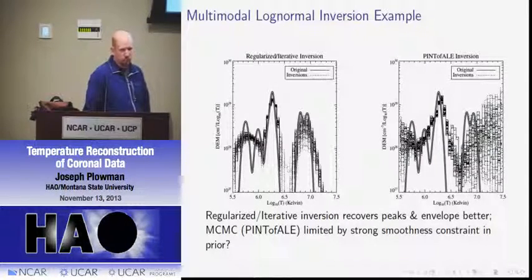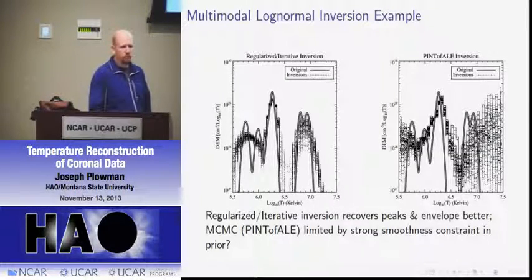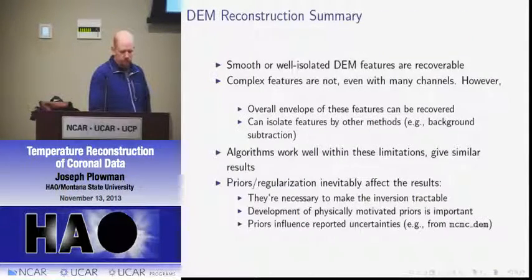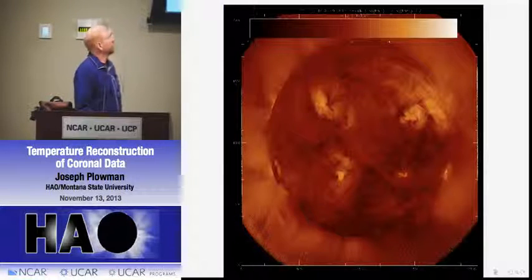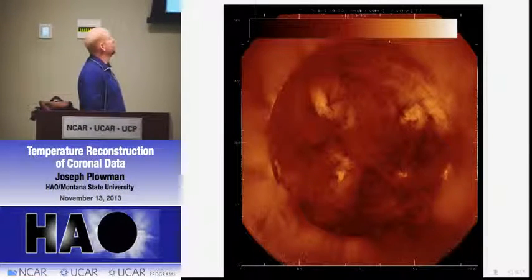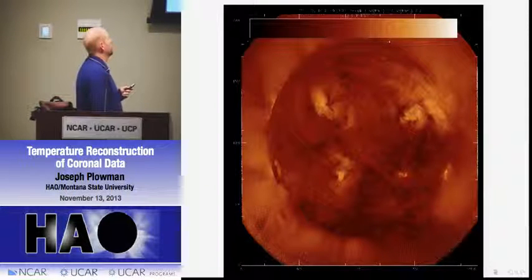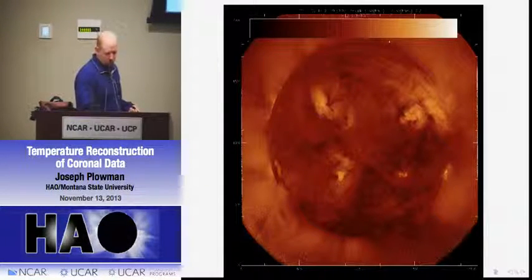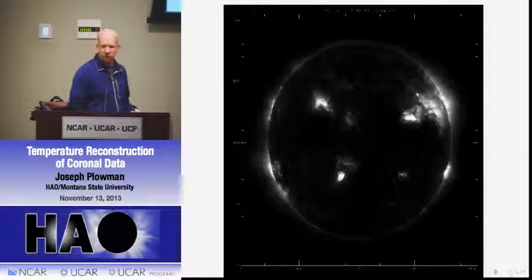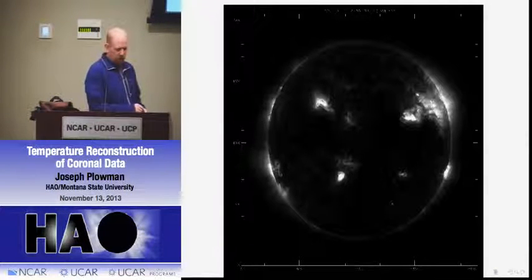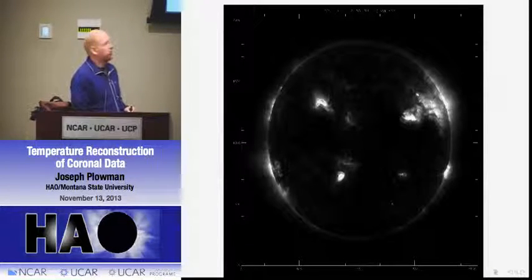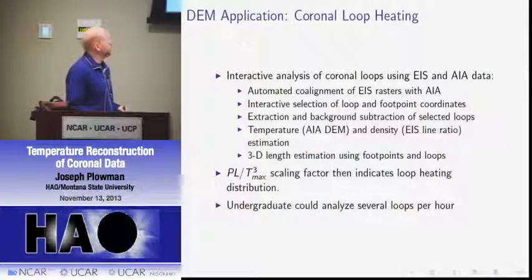One thing this lets you do is make temperature maps of the solar corona, or emission measure maps, or some combination thereof. Another thing we've been working on is to try to leverage this technique to look at the heating functions of coronal loops. I've developed a code that allows you to interactively analyze them using EIS and AIA data, with a module that does automated co-alignment of EIS rasters.